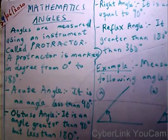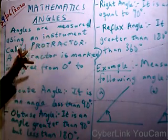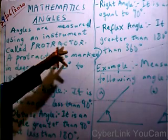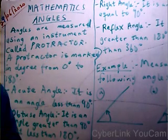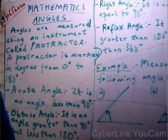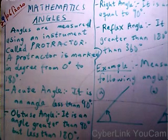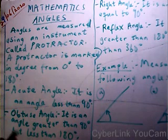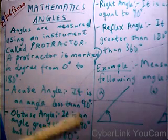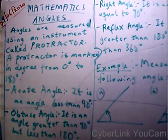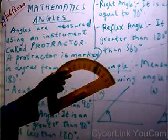Angles are measured using an instrument called a protractor. Remember when we started construction, I introduced some instruments to you which you use for construction. So if you want to construct an angle, we use two major instruments — these are the ruler and the protractor.